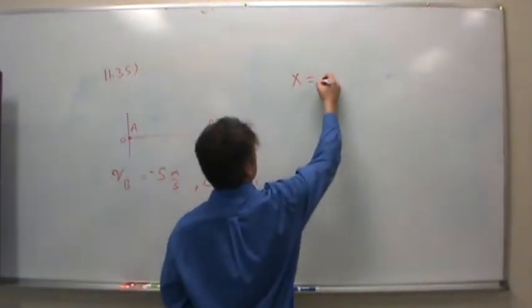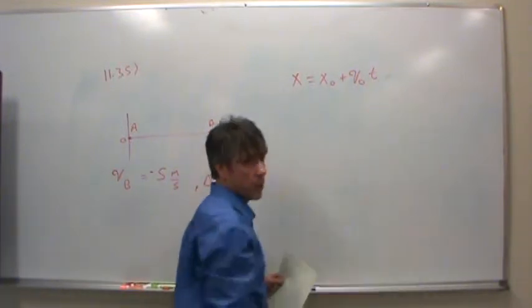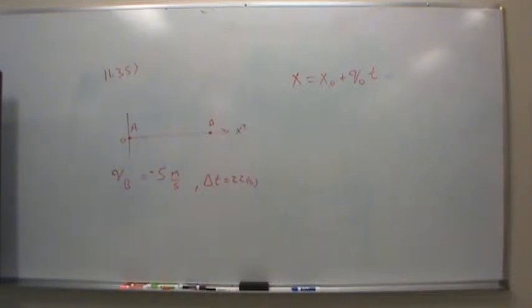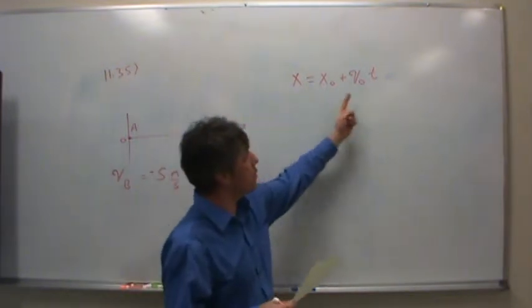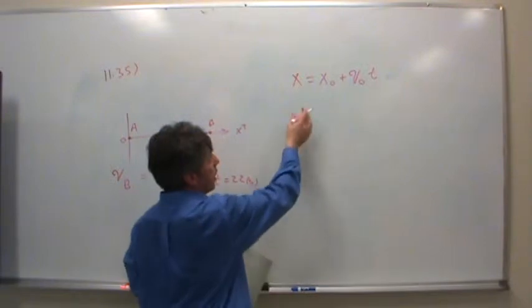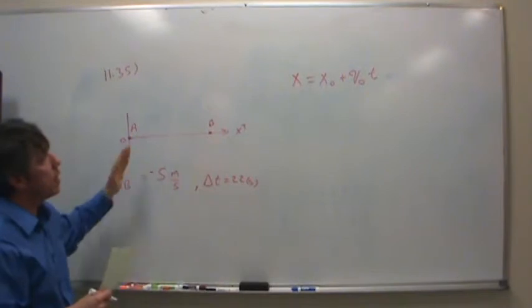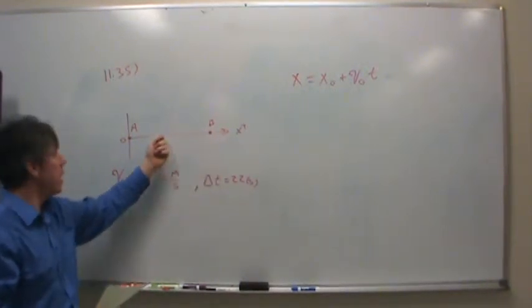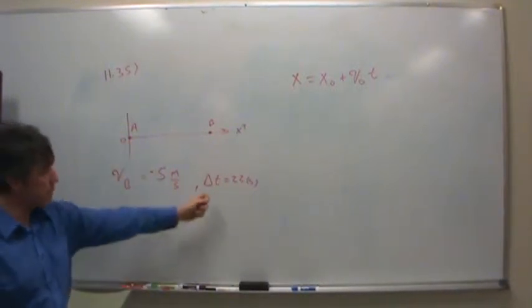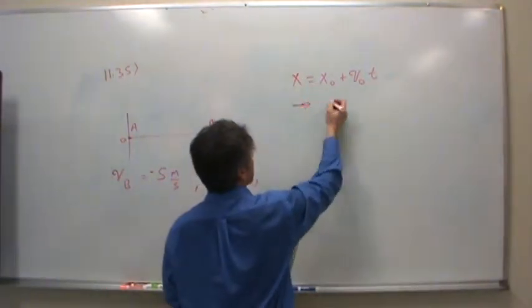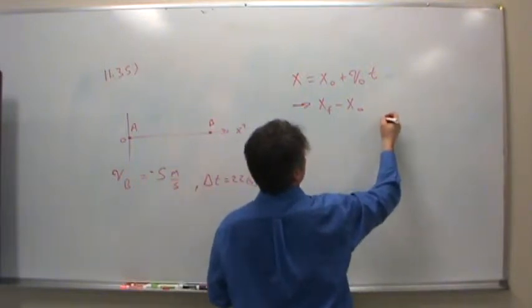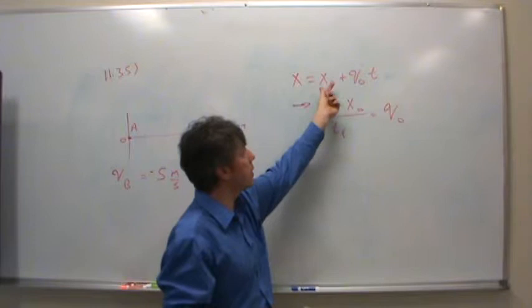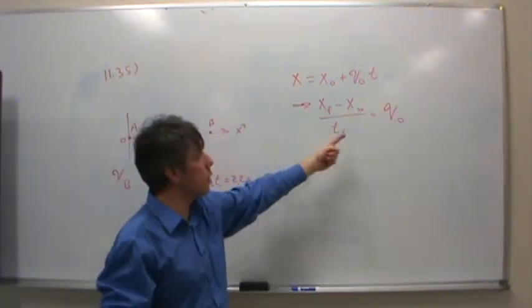I'll write it again. X equals X naught plus V naught T, right? And so what I'm really looking for is how much distance the bus accomplishes in going from B to zero. So I'm going to apply this to a particular point. There's two points of interest: the time when the bus is here at time zero, and the time when the bus is here, which is time final. We know time final is 22 seconds. So what that really means is that X final less X initial divided by time final equals V naught.